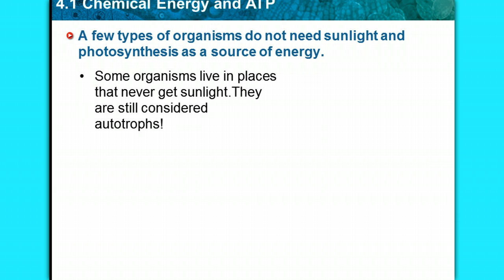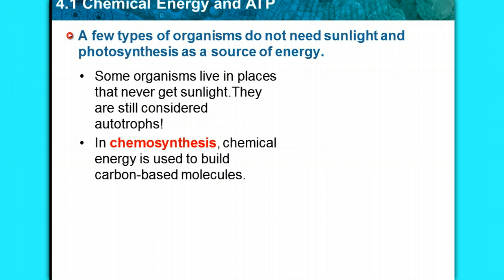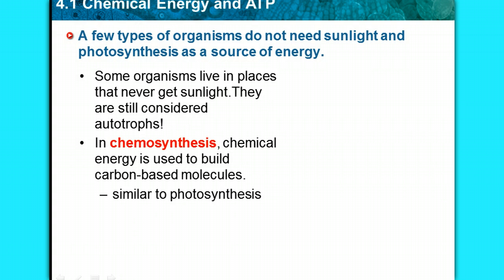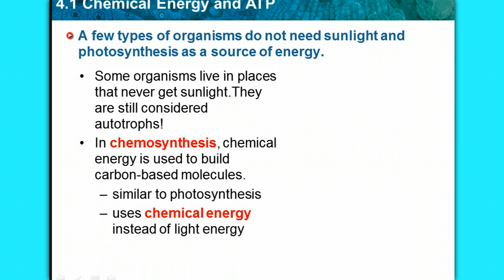Some organisms do not need sunlight and photosynthesis as a source of energy. Some live in places that never get sunlight but are still considered autotrophs — they use a process called chemosynthesis. The prefix 'chemo' refers to chemical, and 'synthesis' means building or producing carbon-based molecules. It uses chemical energy instead of light energy from the environment.